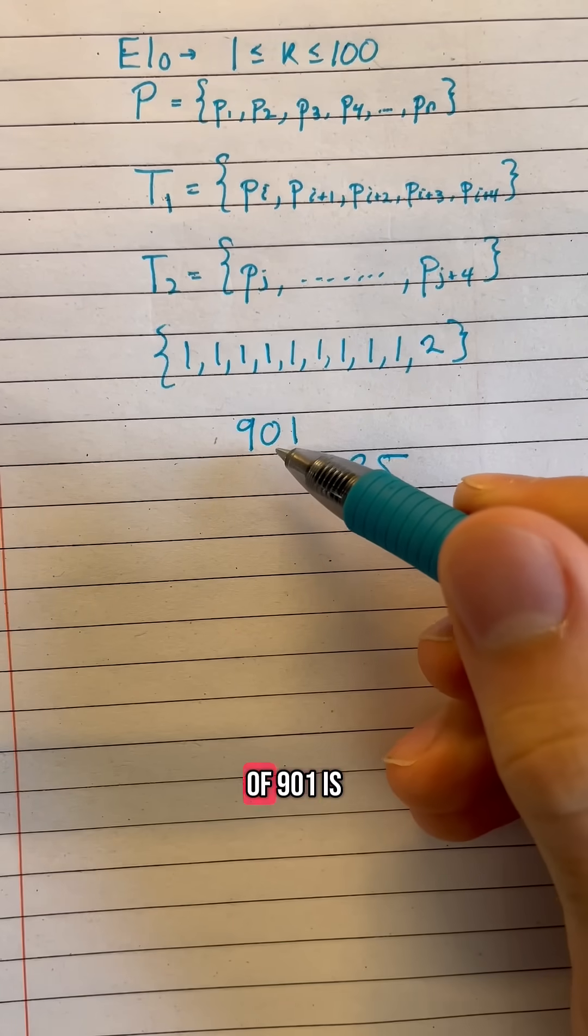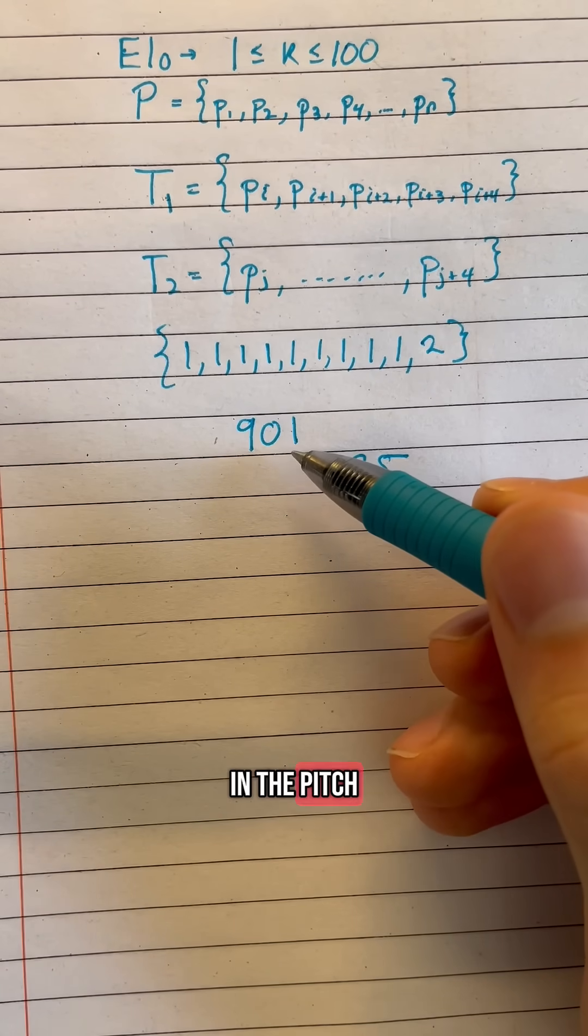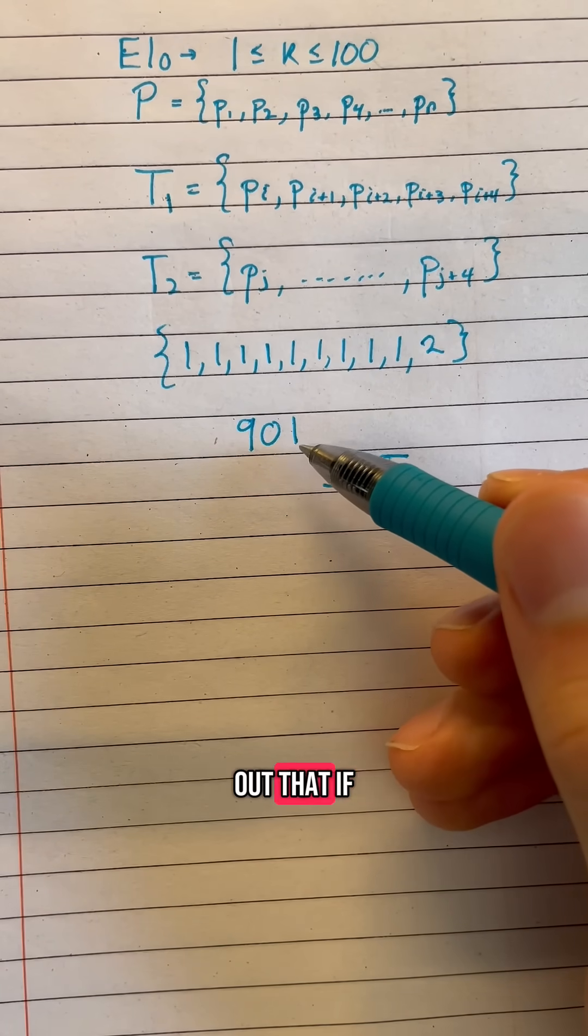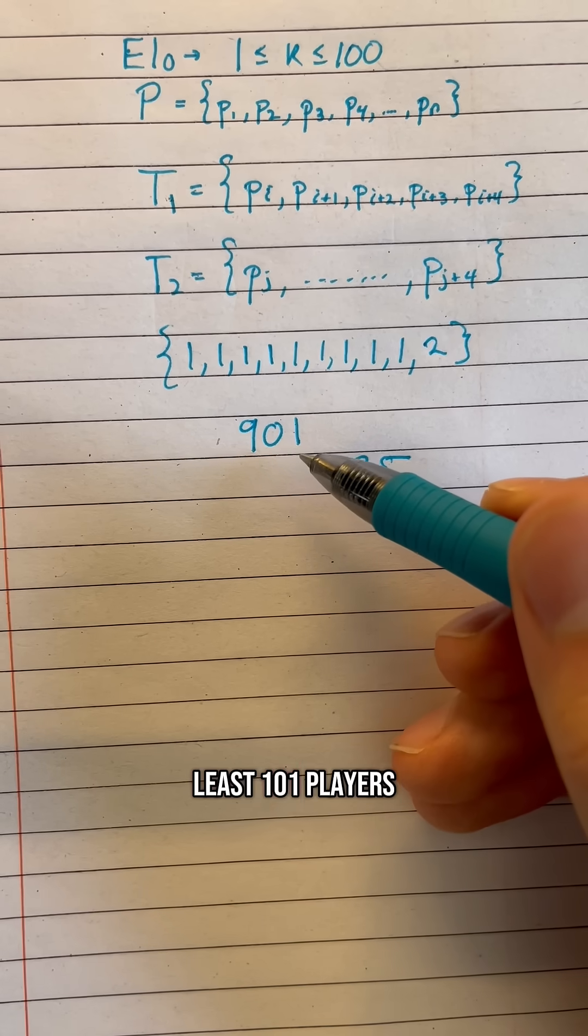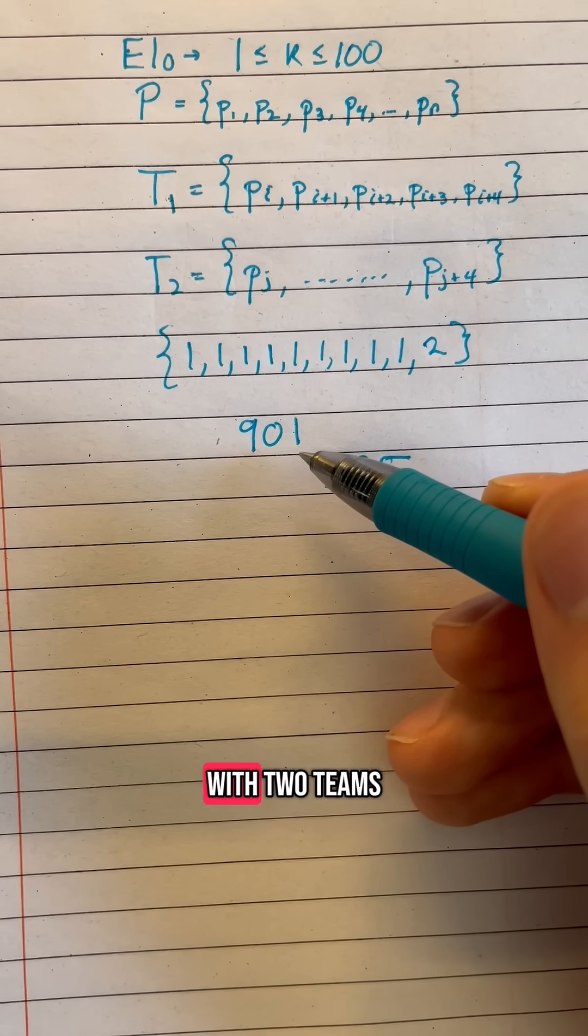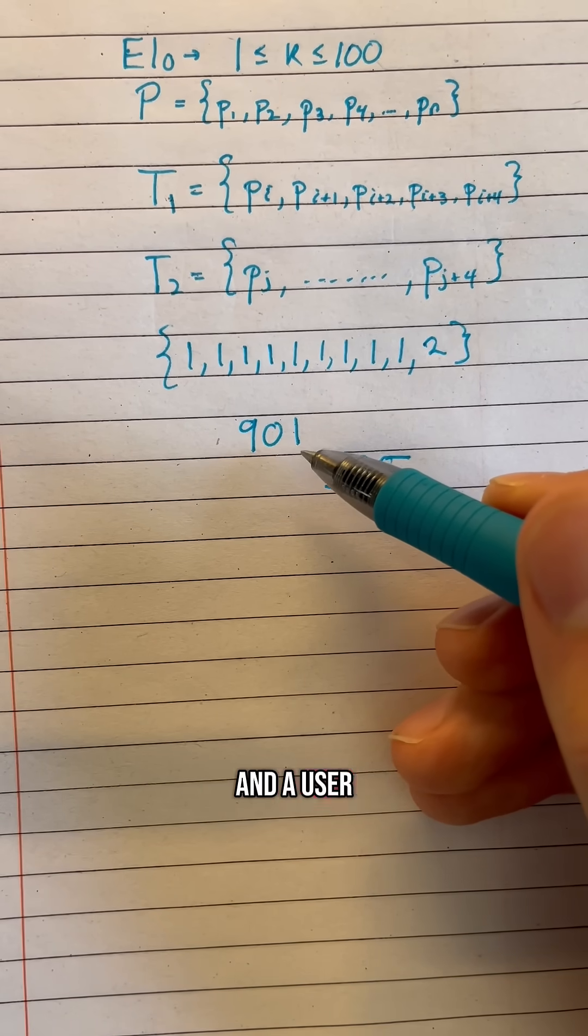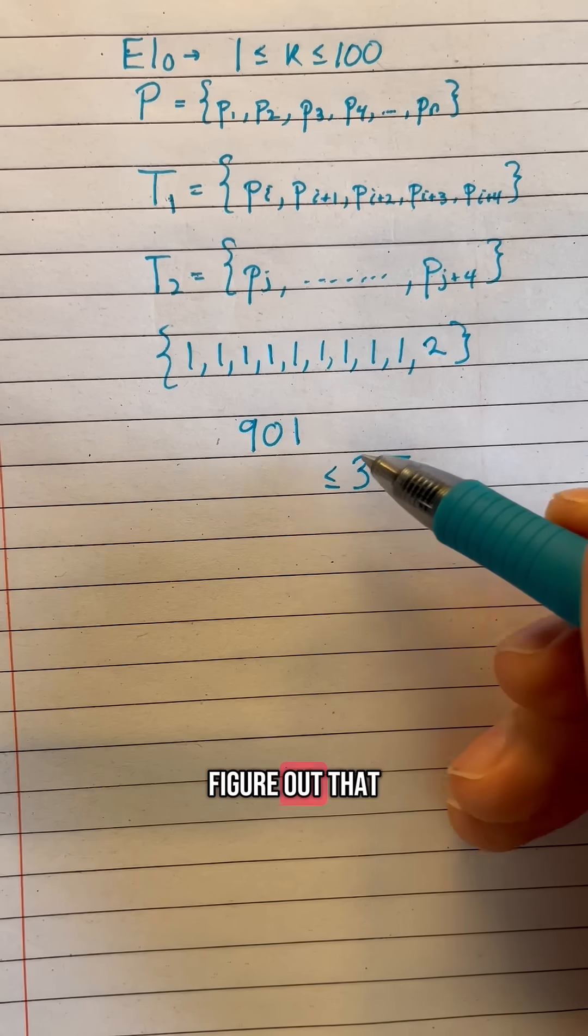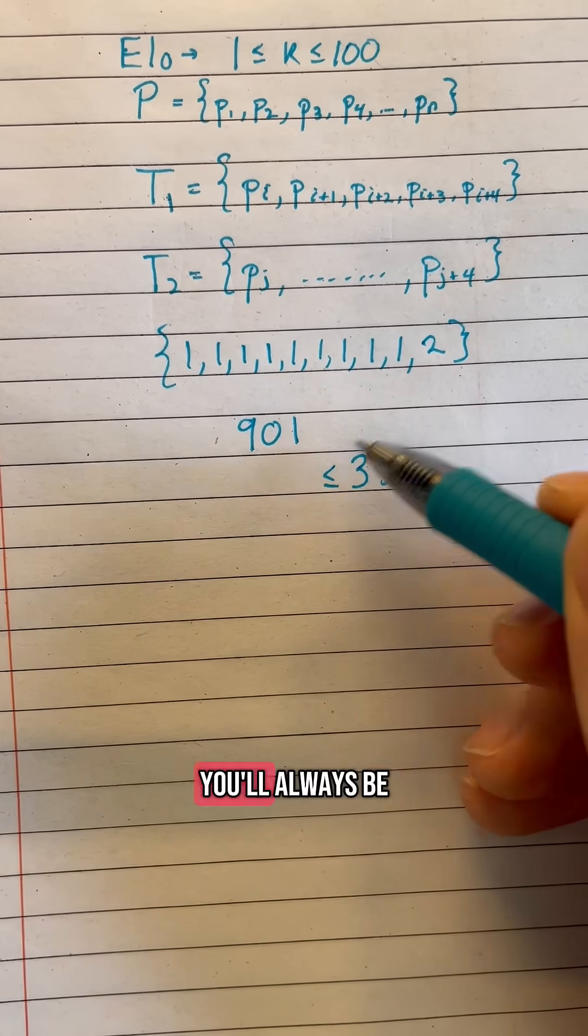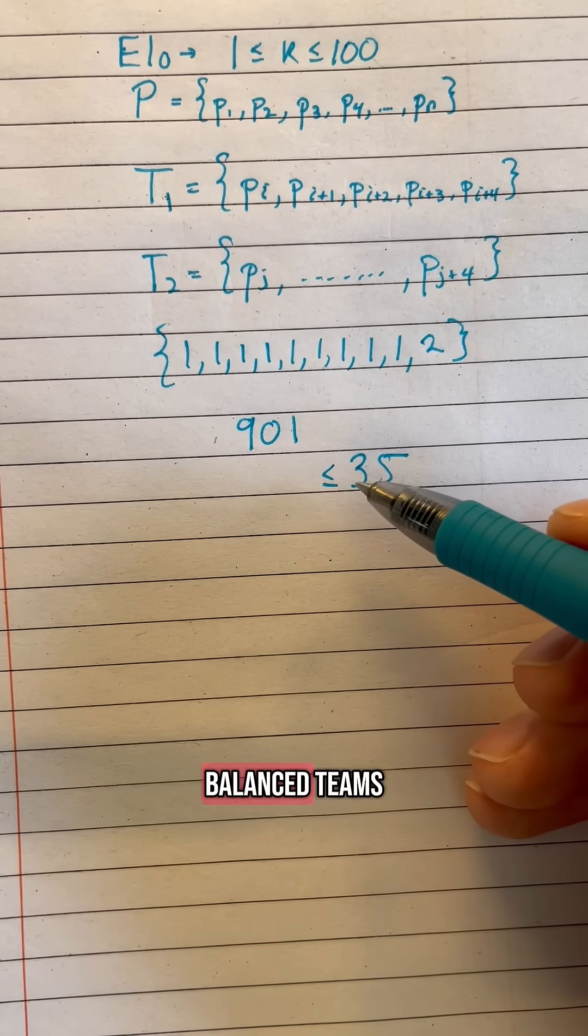However this bound of 901 is not optimal. With a little bit more work in the pigeonhole principle, you can figure out that if you have at least 101 players you're always guaranteed to come up with two teams of players. And a user on math overflow was able to figure out that if you have at least 35 players, you'll always be able to come up with two balanced teams.